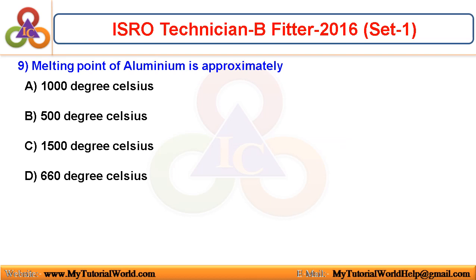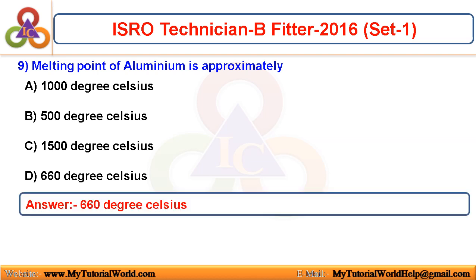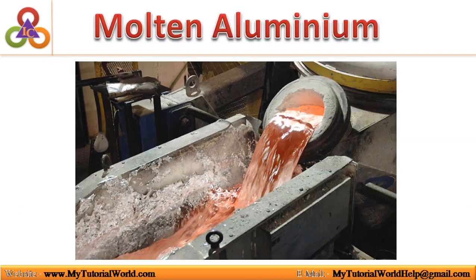Melting point of aluminum is approximately? The answer is 660 degrees Celsius. The melting point of aluminum is 660 degrees Celsius.